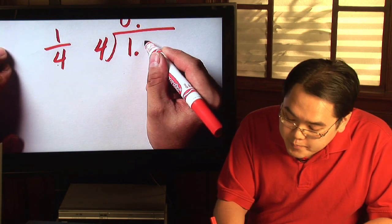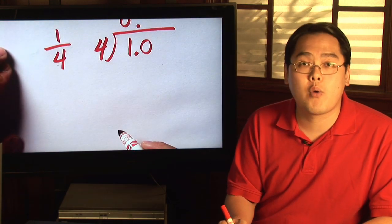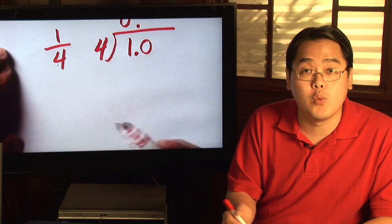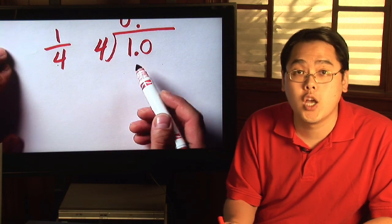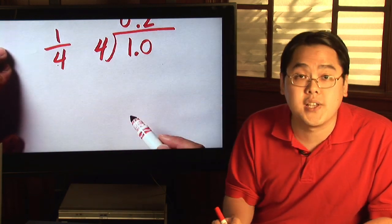So, for example, I'm going to put a zero right after the one and then see what four goes into ten. Well, as you know, four goes into ten twice.